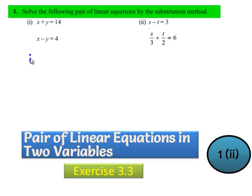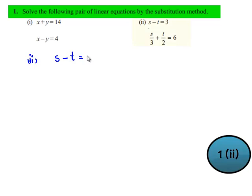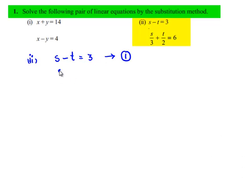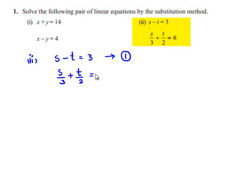Coming to the second bit, s minus t equals 3, let this be equation 1, and s by 3 plus t by 2 equals 6, let this be equation 2.